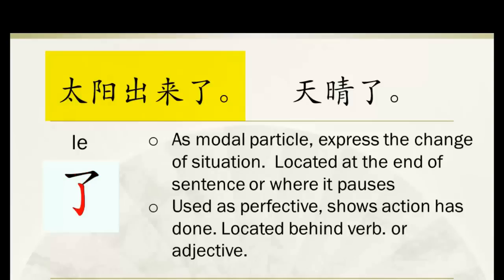Or you can say 天晴了. Remember the word 晴天 means sunny day. Now using 晴 as a verb, it means 'become sunny.' Both sentences contain the same zi 了.